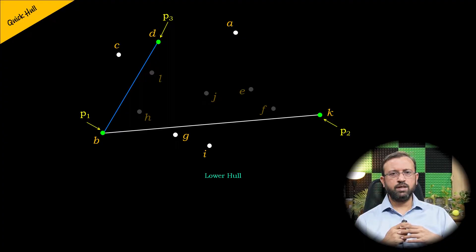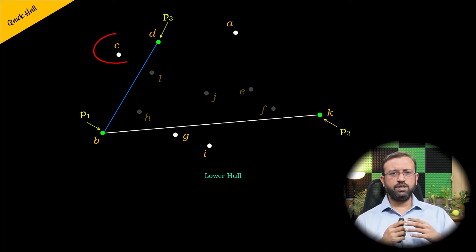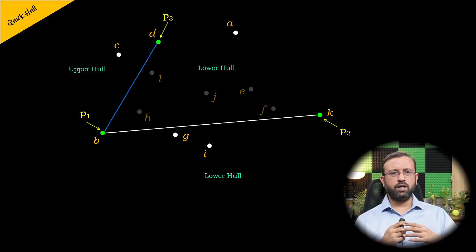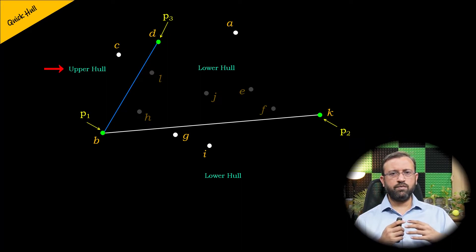The points in the upper hull are then divided based on the line segment between points P1 and P3. All the points to the left of the line segment P1-P3 form the upper hull, and all the points to the right form the lower hull. Both the upper hull and the lower hull include the points P1 and P3.